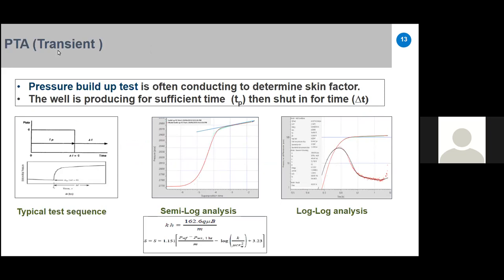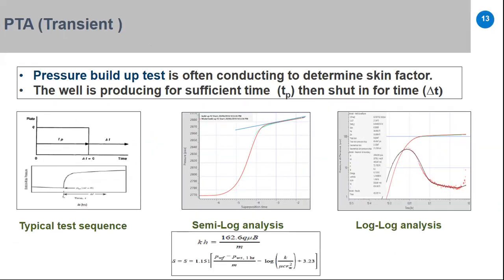Pressure transient analysis uses a pressure buildup to determine skin factor. The well is produced for a sufficient time Tp, then shut in while observing pressure buildup. From semi-log and log-log analysis using the Horner equation, a well-test engineer can determine permeability and then skin. A positive skin means the well is damaged; a negative skin means the well has been stimulated.